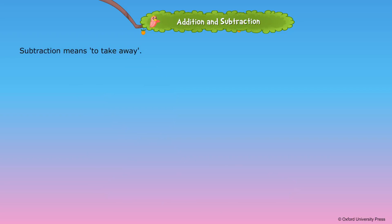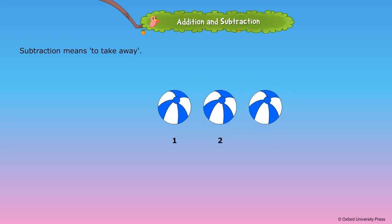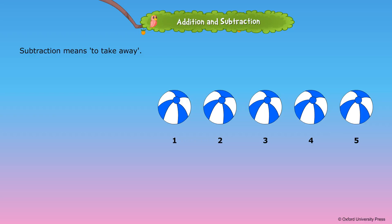Subtraction means to take away. Let us take five balls. Now from the five balls, we take away two balls. We can show taking away by crossing out. Now count the number of balls left.